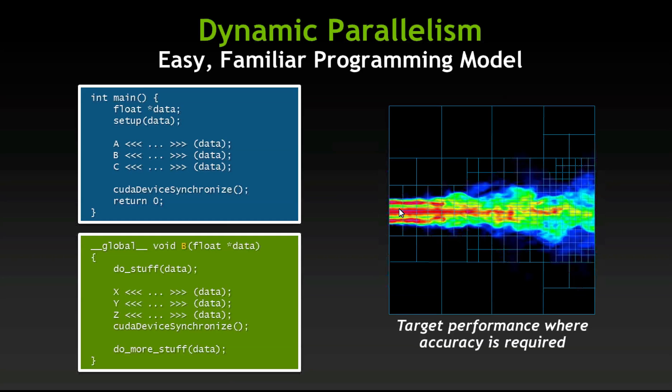One example is an adaptive mesh simulation for computational fluid dynamics. You can take each square in the image and do all the computation associated with that square on one core of the GPU. Squares that don't have much data to compute can be much larger, while those with lots of information requiring more computation can be much smaller. This lets you distribute the workload across the GPU very efficiently for much higher performance in a very easy way.